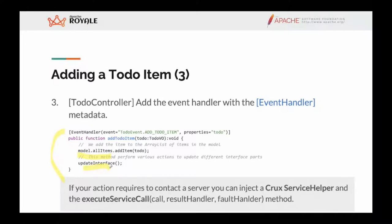Crux knows it can handle that event and will do so — we'll use the allItems ArrayList to add the one item we created. If we want server contact, in this case it's not needed, but we can use a service helper to make calls to the server and handle the result or failure.